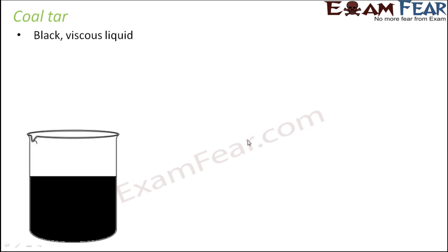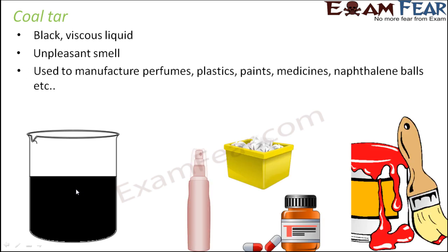Coal tar is a black viscous liquid — if you put it in a vessel you can feel how thick it is. It has an unpleasant smell. However, it is useful in manufacturing a lot of products like perfumes, plastics, paints, medicines, and naphthalene balls. Coal tar is therefore useful in producing many different substances.